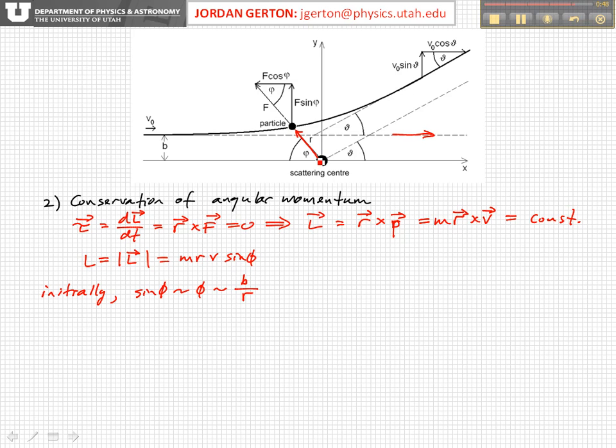So if we think about something really far away, if we think that the angle is really small, then this is going to be R, and this is going to be B, and so we can approximate phi as B over R,